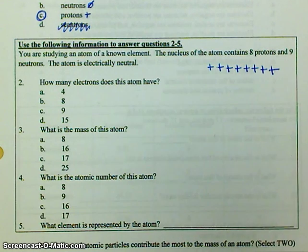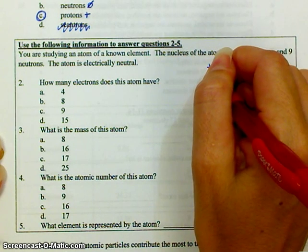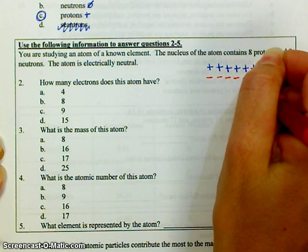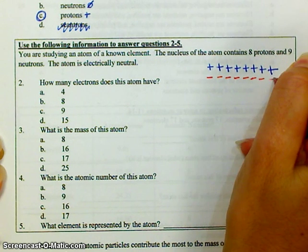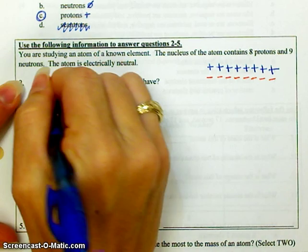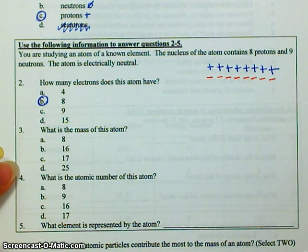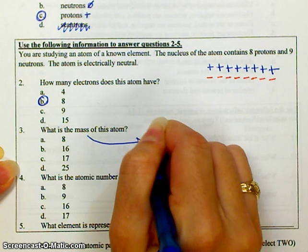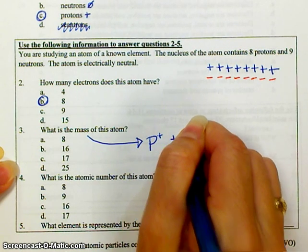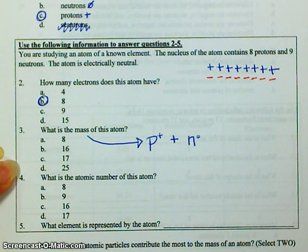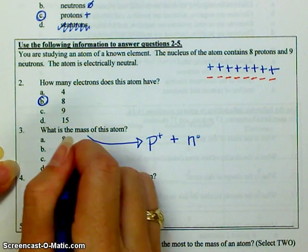So how many electrons does this atom have? It has eight. What is the mass of the atom? The mass of an atom is protons plus neutrons, and for this atom that's eight protons and nine neutrons for a total of 17.